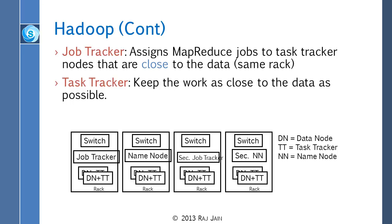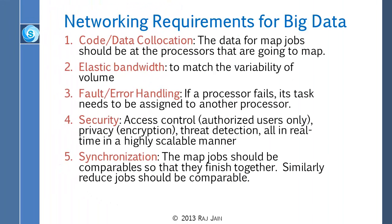There are five things that big data needs in terms of networking. First, it needs to make sure that you can do the computation at the same place where the data is — code and data co-location. Second, the network should be able to handle big variability in demand, because when you have MapReduce, lots of Map jobs get done at the same time, and suddenly there is a whole avalanche of data coming to the reduce processors. The network needs to be able to handle that.